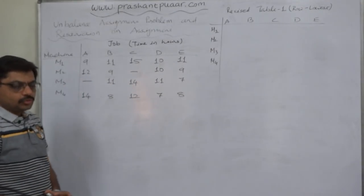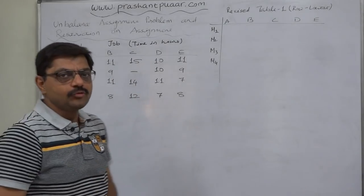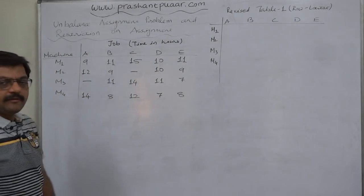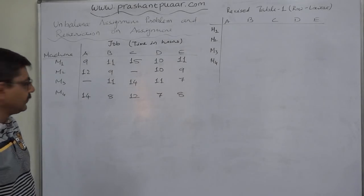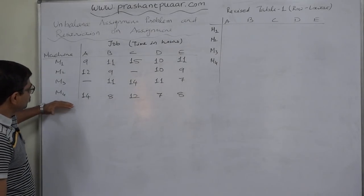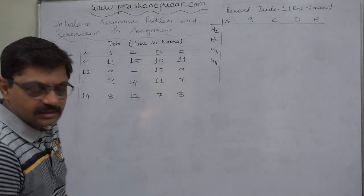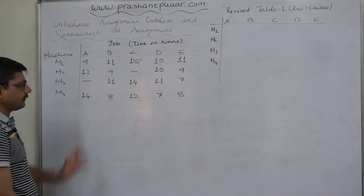There is no other importance of these two places. But to solve this problem first, we have to make it a balanced assignment problem. What to do? A very simple thing is to be done. If machines are less than jobs, then add dummy machine or machines.